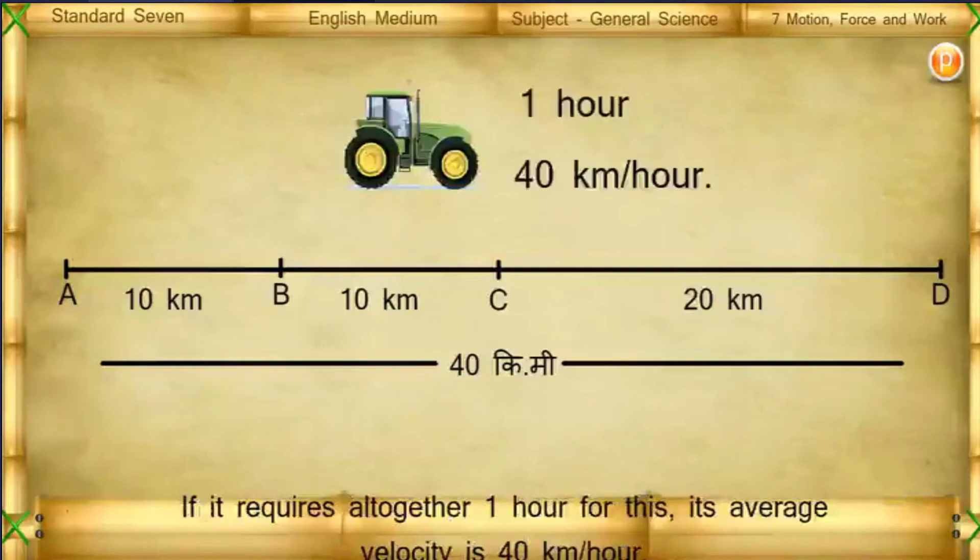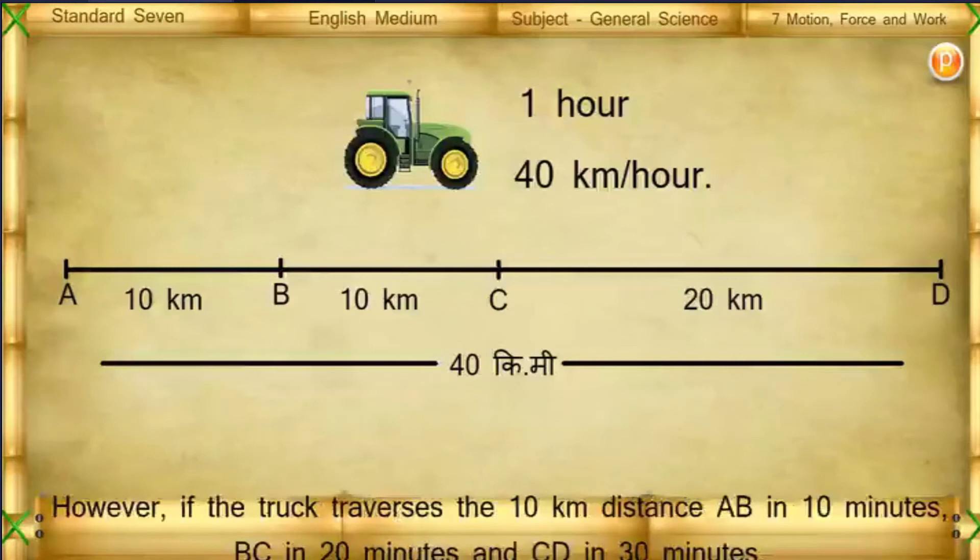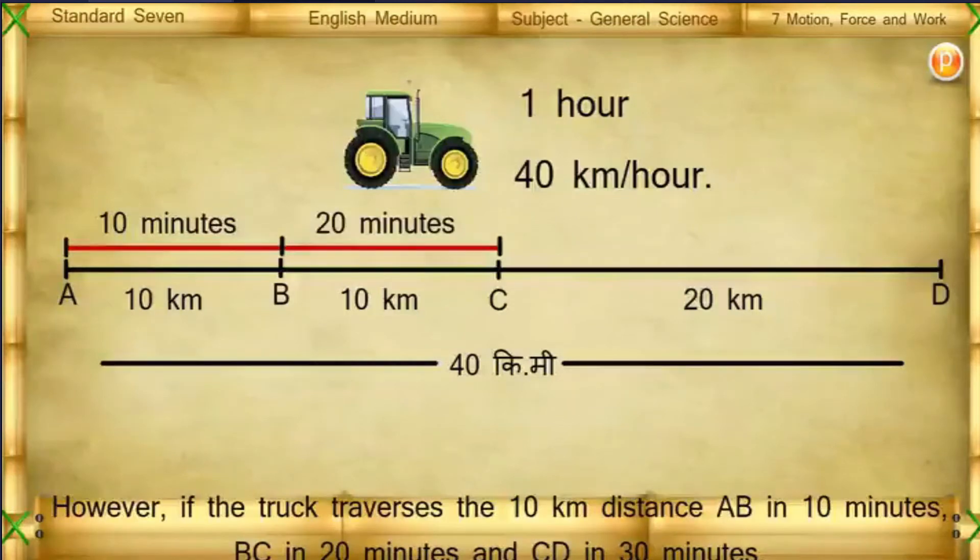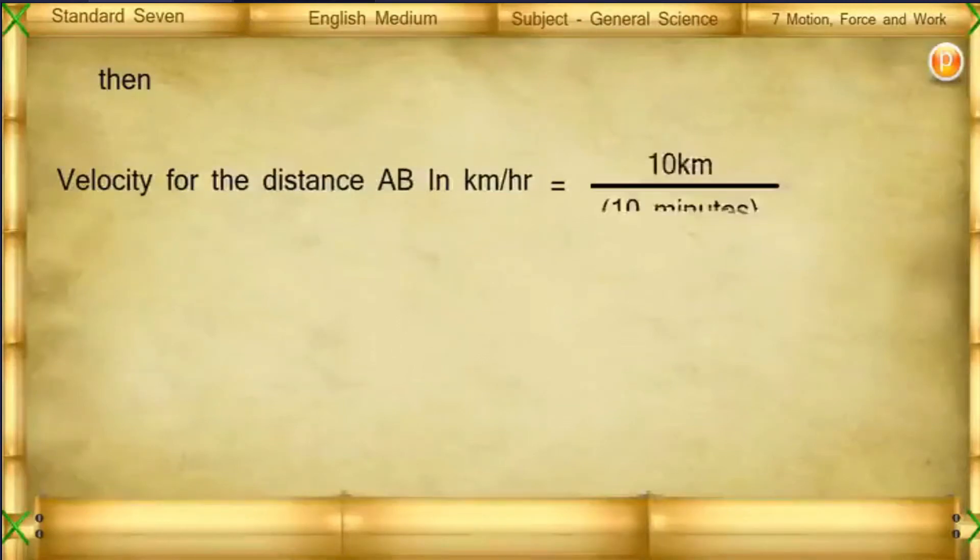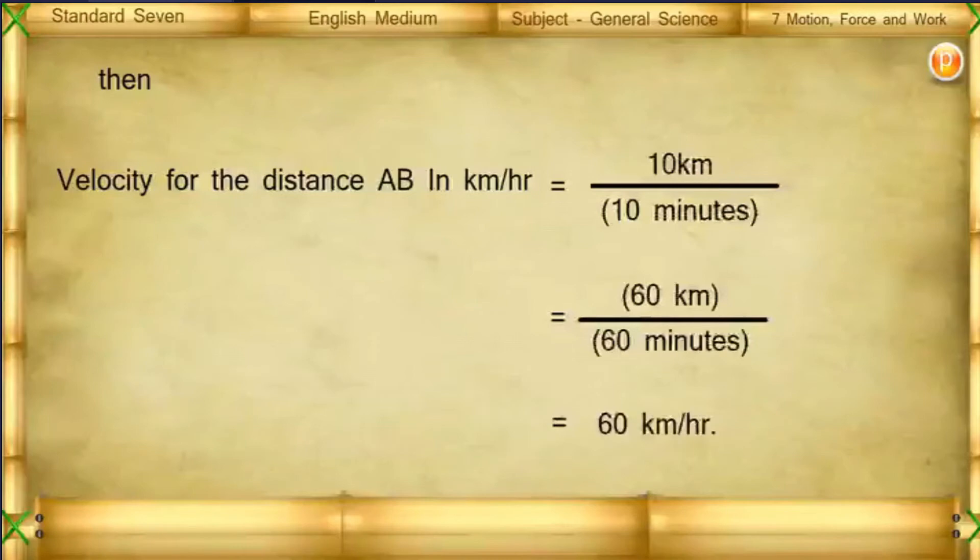However, if the truck traverses the 10 kilometer distance AB in 10 minutes, BC in 20 minutes and CD in 30 minutes, then velocity of the distance AB in kilometer per hour equals 10 kilometers upon 10 minutes, that is equal to 60 kilometers upon 60 minutes equals 60 kilometers per hour.